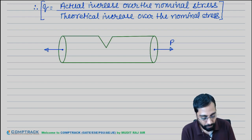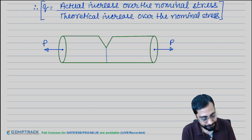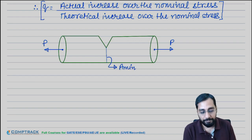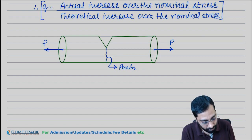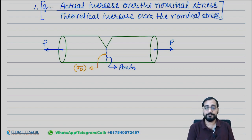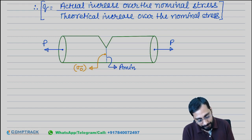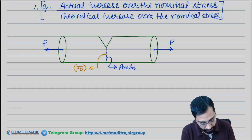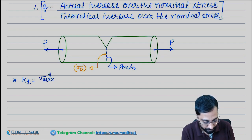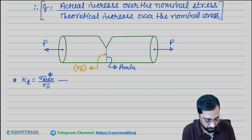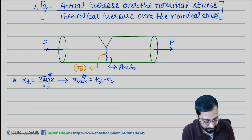If the load is static only, what will be the condition? This notch location will become your minimum area. So the stress here will be your nominal stress — sigma naught. But the theoretical stress concentration factor KT is given by: actual maximum stress divided by the nominal stress. So the actual maximum stress will become KT times the nominal stress.